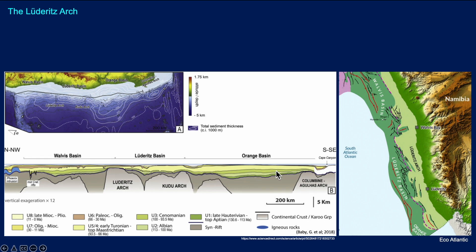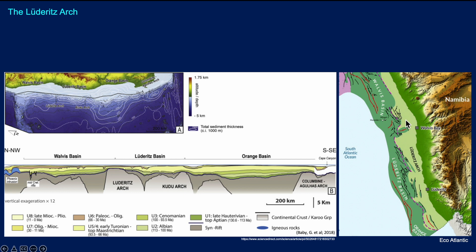The Orange Basin in 2022 had the Graf and Venus discoveries that have really generated an awful lot of interest in offshore Namibia. On this map from Eco-Atlantic, not entirely clear where the Lüderitz Arch is, but we can certainly see a similar interpretation.